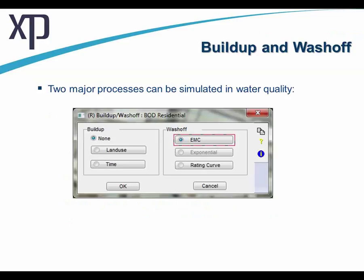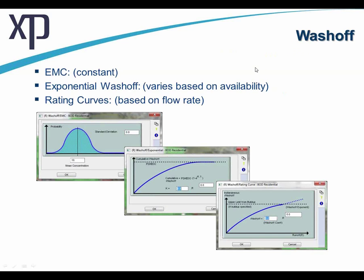There are many ways we can do this, and we will concentrate on the most commonly used methodology globally — that's EMC, Event Mean Concentrations. We could get very elaborate and actually build up information on the build-up of pollutants upon the surface, and then model what will be washed off when it rains, considering wet spells, dry spells, and even street cleaning operations. We're going to concentrate on EMC because it's the most commonly used one globally. With EMC, we add in a mean concentration — that's the first of three curves shown here. The other two involve exponential wash-off and rating curves.